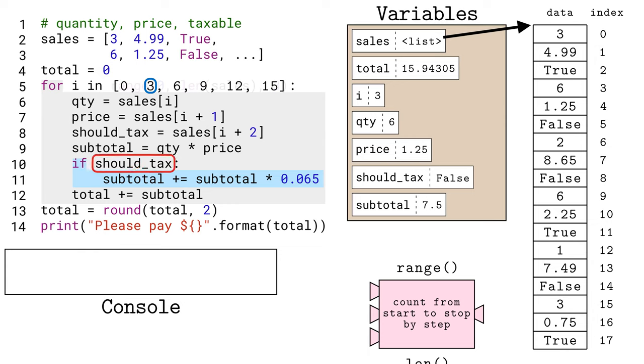Then the if statement looks at should tax to decide if line 11 should run or not. Should tax is false, so the indented line 11 is skipped, and we add subtotal to total, and save it back to total using plus equals.